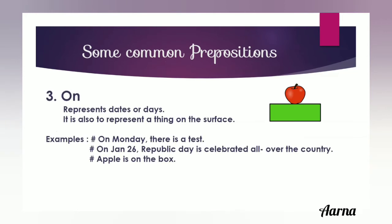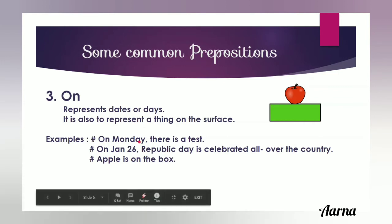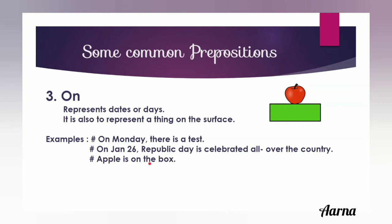The third preposition is 'on'. It represents dates or days, and may also describe an object that is on the surface of something else. For example: 'on Monday', 'on Jan 26' — describing a day and a date, so we use 'on'. 'Apple is on the box' — the apple is touching the surface of the box, so we use 'on'.